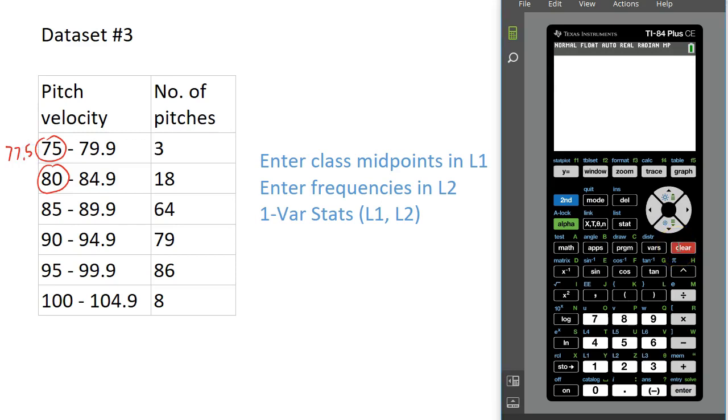If I'm going to find the midpoint of the second class, the 80 to 84.9 class, we use the lower class bounds to find the midpoints. So I want to find the value halfway between 80 and 85. I would do 80 plus 85 divided by 2, and that's 82.5. We go ahead and do that all the way down to the bottom.